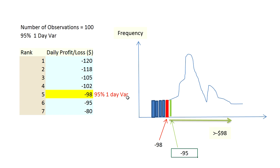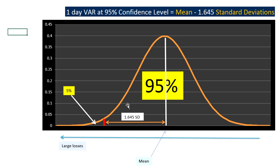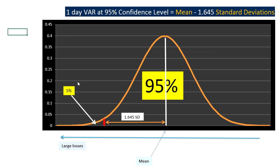In another video I will show a worked example of historical VaR on an Excel spreadsheet. The next approach is the parametric approach. In the parametric approach we assume some parameters — the first big assumption, which is normally not true, is that we assume that profits and losses, in other words the daily returns, follow a normal distribution. Most of the time financial derivatives or financial assets' daily profits and losses do not follow a normal distribution.